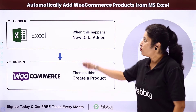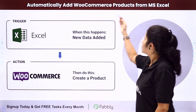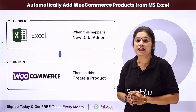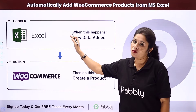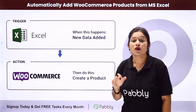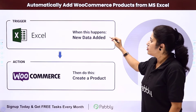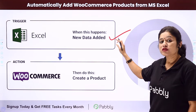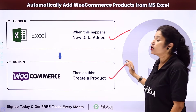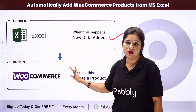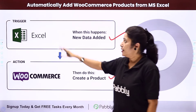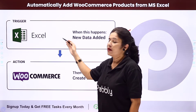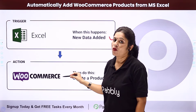In this video we are going to learn how you can automatically add WooCommerce products from MS Excel. The idea is that you have created a spreadsheet in MS Excel where you are adding the details of your products. Whenever you add new data to that spreadsheet, automatically a new product should get created in WooCommerce. Your trigger application would be MS Excel and your action application would be WooCommerce.